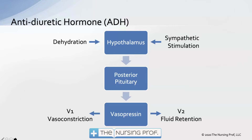Antidiuretic hormone — the name itself is a little bit confusing. Diuresis is the elimination of fluid, and this hormone causes our kidneys to not diurese. So if we have antidiuretic hormone, we're not diuresing. If we don't have it, we are diuresing. It's kind of like a double negative — we don't have it, we're diuresing.